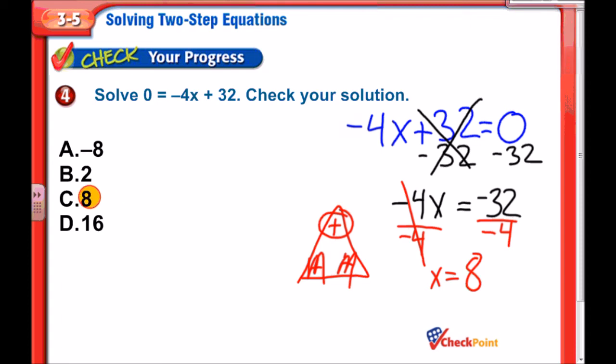Let's make sure that works, though. I'm going to put that 8 back into the problem. Negative 4 times positive 8 is negative 32 plus the positive 32. Oh yeah, they cancel each other out. Additive inverse property is what we call that. And that equals 0.